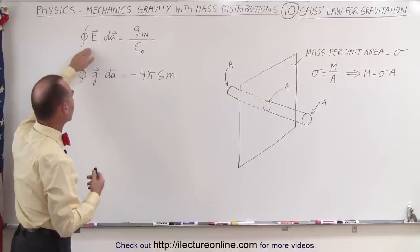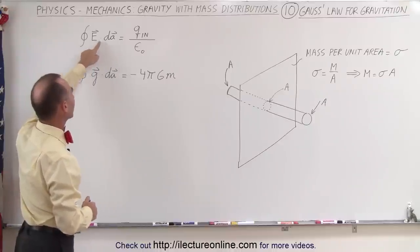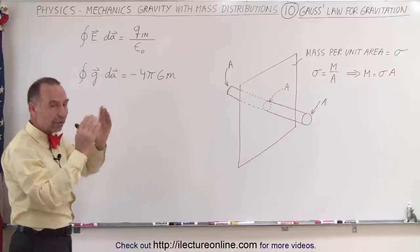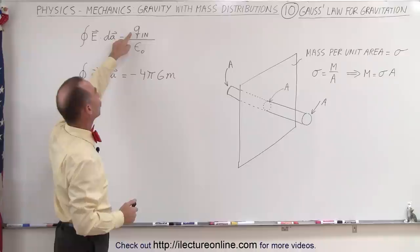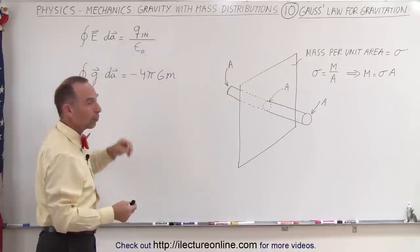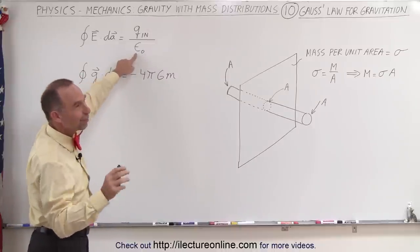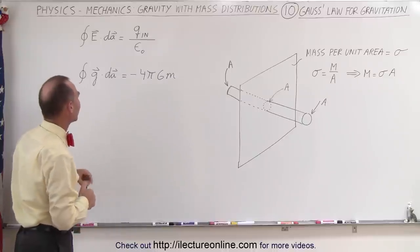Gauss's law for electrostatics says that the surface integral of the electric field strength times the area of that surface is equal to Q, the charge inside that surface, divided by epsilon sub-naught, which is the permittivity of free space.